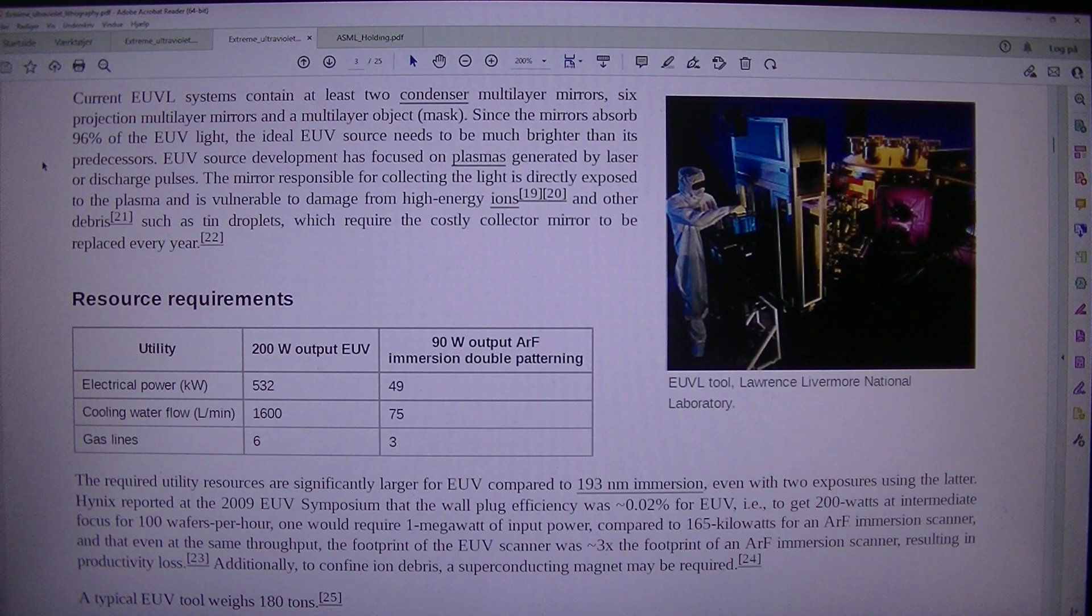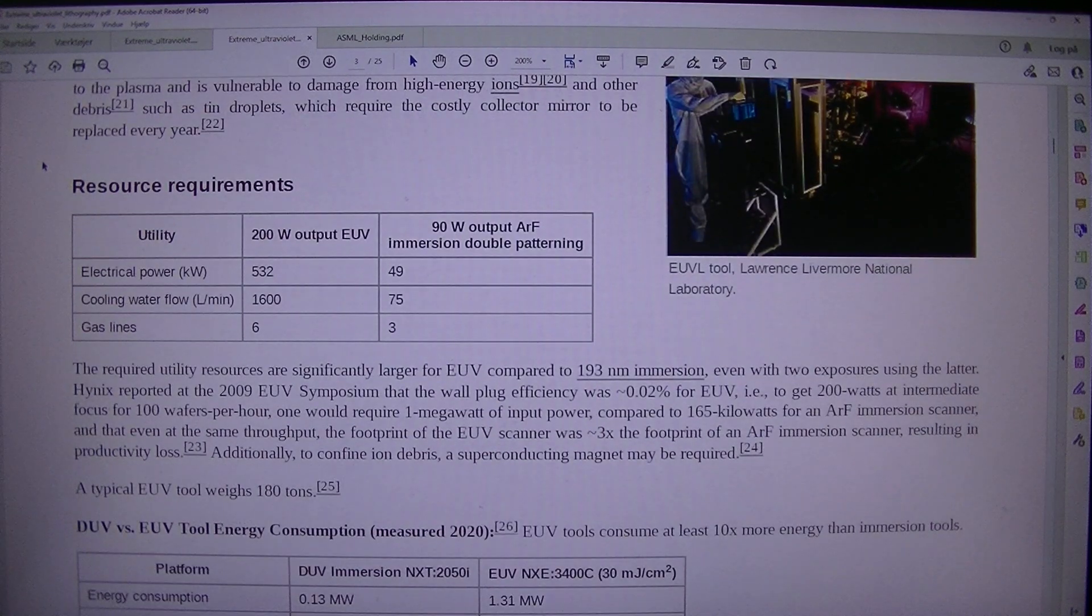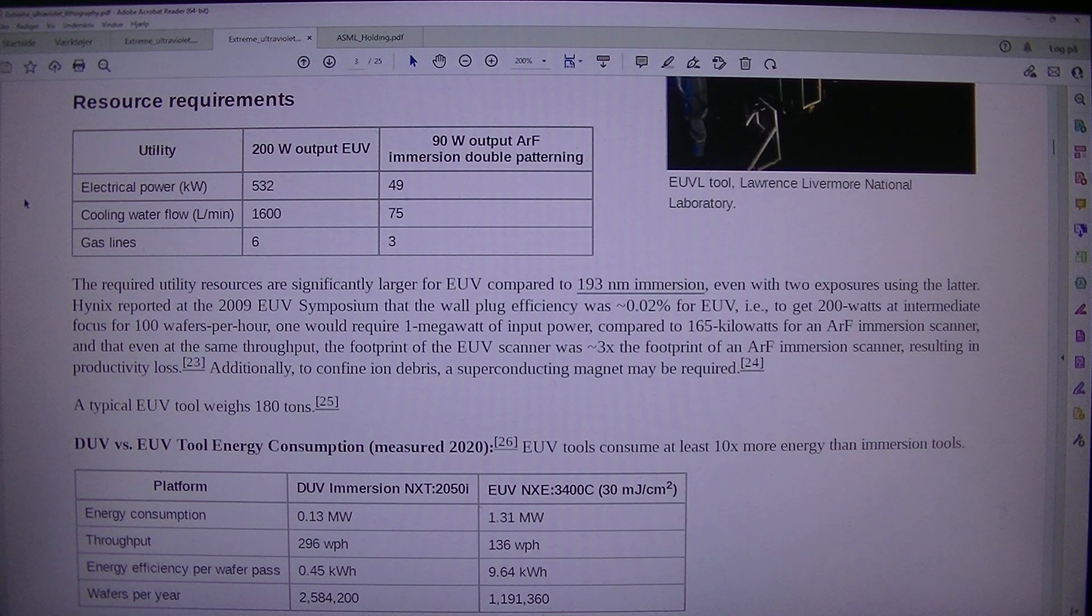Resource requirements: Utility 200W output EUV, 90W output RF immersion double patterning, electrical power 532 kilowatts, 49 kilowatts, cooling water flow 1600 L/min, 75 L/min. The required utility resources are significantly larger for EUV compared to 193 nm immersion even with two exposures using the latter. Hynix reported at the 2009 EUV symposium that the wall plug efficiency was approximately 0.02 percent for EUV, i.e., to get 200 watts at intermediate air focus for 100 wafers per hour, one would require 1 megawatt of input power compared to 165 kilowatts for an RF immersion scanner, and that even at the same throughput, the footprint of the EUV scanner was approximately 3x the footprint of an RF immersion scanner.